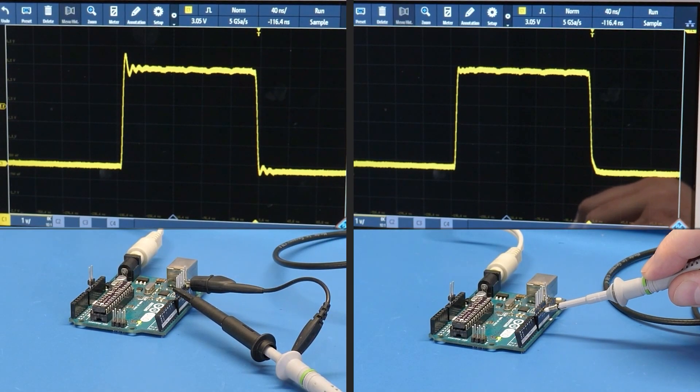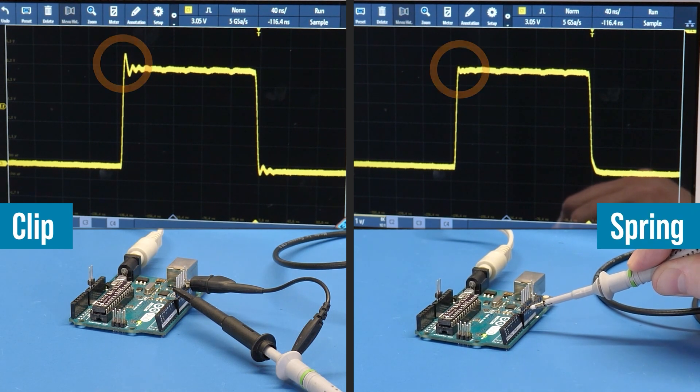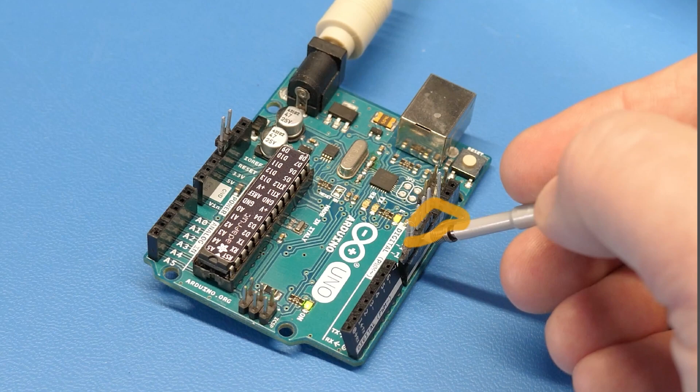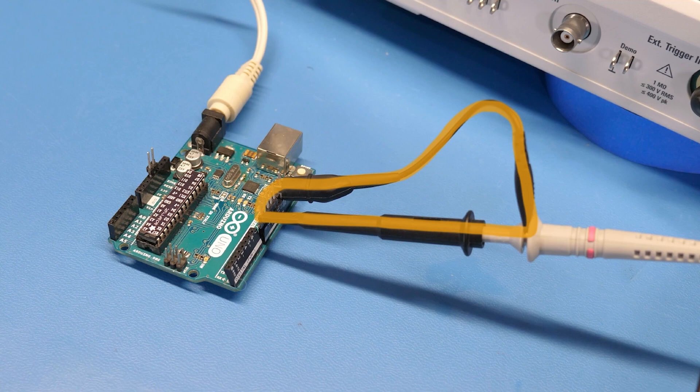Anyway that is why if we compare the same board using a probe that has the ground wire with alligator clip and a probe using a ground spring the waveform of the signal is different. The ground spring has a super short return path while the alligator clip has a lot of metal and a relatively long loop.